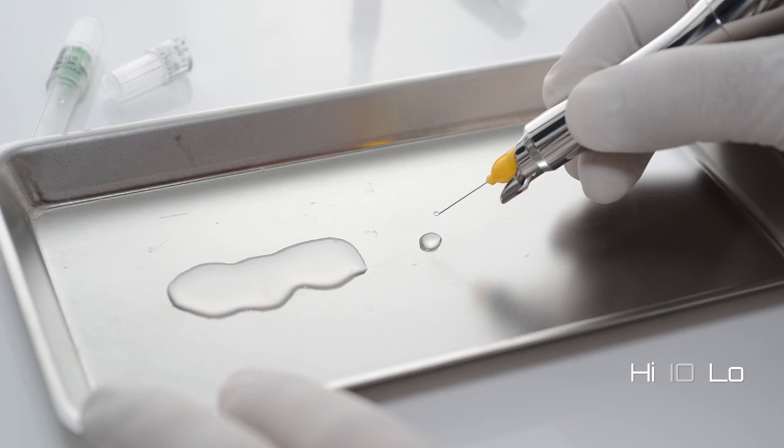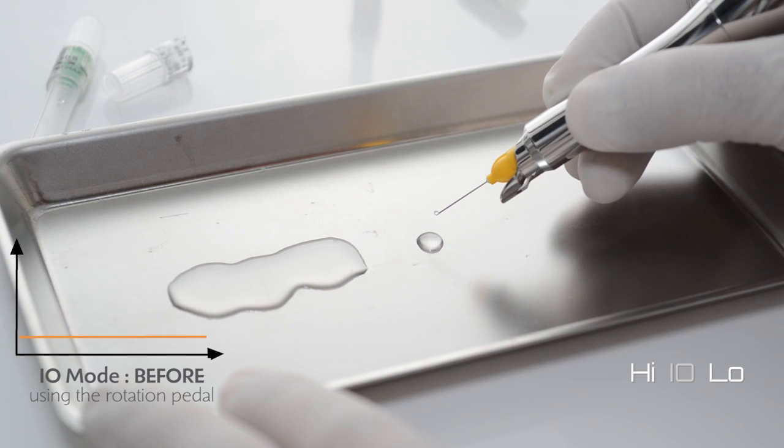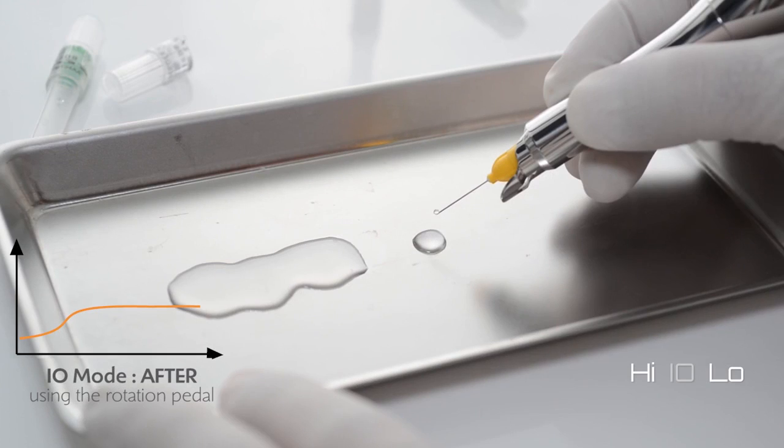In intraosseous mode, QuickSleeper automatically adapts its speed for attached gum anesthesia. The speed is constant. After pressing the needle rotation pedal, QuickSleeper automatically goes into progressive speed to inject into the cancellous bone.